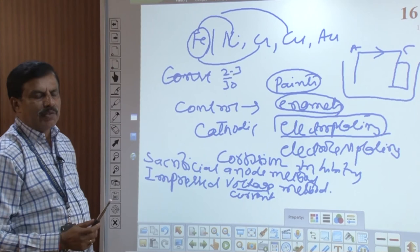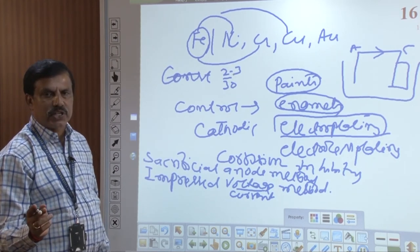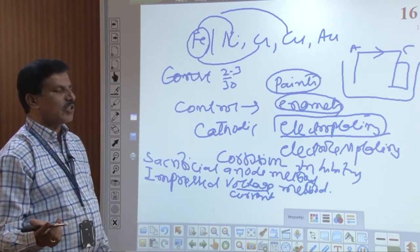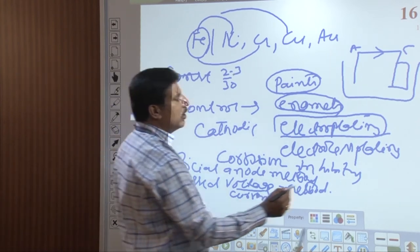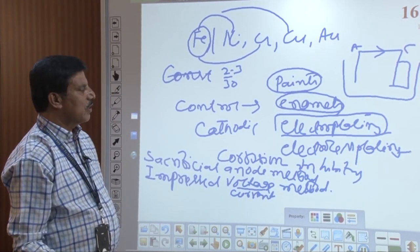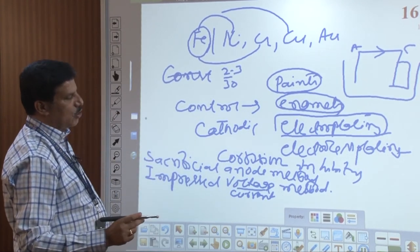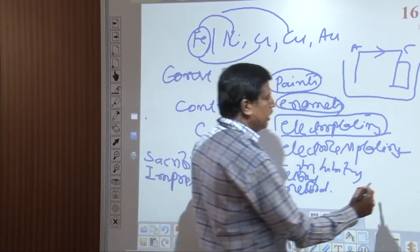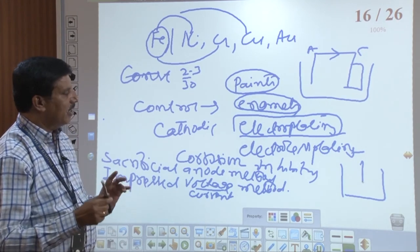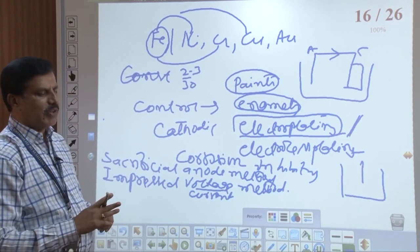Corrosion control methods include: applying paints, using corrosion inhibitors, the sacrificial anode method, and the impressed voltage or current method. Metals like metallic doors and windows need paint or enamel to protect them from corrosion. Electroplating is a process in which one metal is coated with another metal — for example, plating nickel, chromium, copper, gold, or silver onto iron, since iron is porous. Electroless plating is a process that deposits metal from its salt solution onto a catalytically active surface using a suitable reducing agent, without using electrical energy.